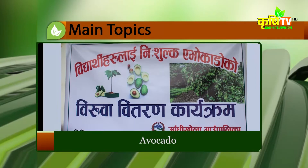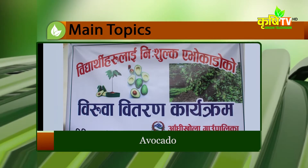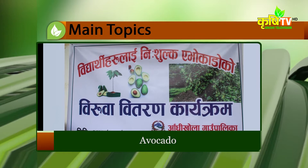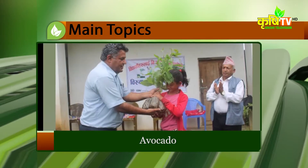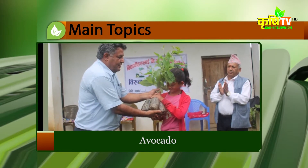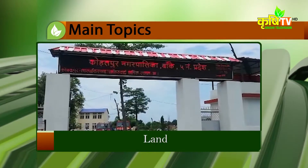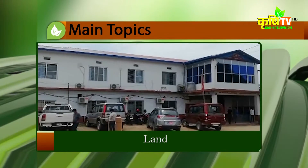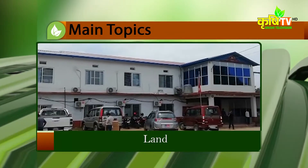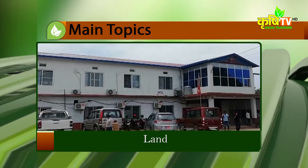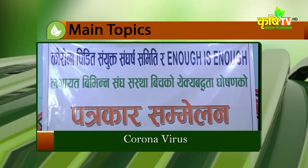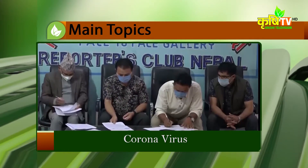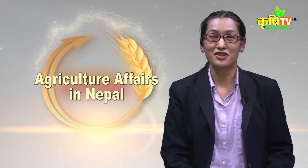Andhikola municipality has distributed avocado saplings to students of class 6 to 12. Avocados have been distributed free of cost to 2,000 students. In Kholpur municipality, ward number four, it has been found that about six bigas of government land worth one arba was transferred in the name of 41 people. The Nepali government is asked to provide relief to the victims of coronavirus. If not, there will be a protest rally against the government actions. And much more.